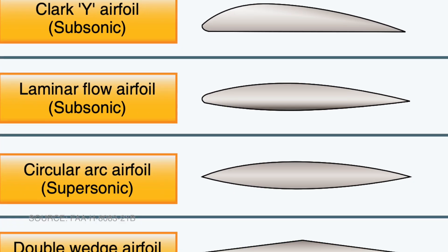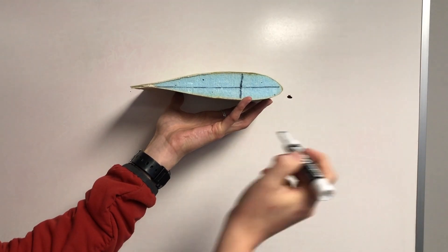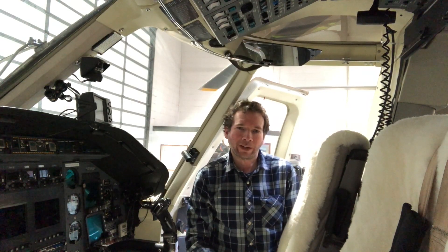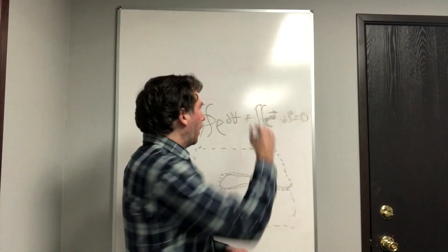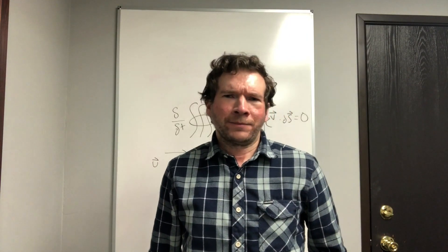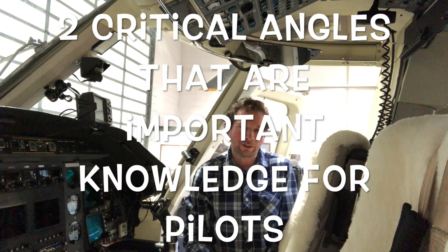Let's define some terms related to wings. The part of the wing that hits the air first is called the leading edge, and the opposite side is the trailing edge. The distance between them is the chord line — spelled C-H-O-R-D. The upper and lower surfaces are called the upper and lower cambers, and the amount of camber is the distance between the point of max camber and the chord line.